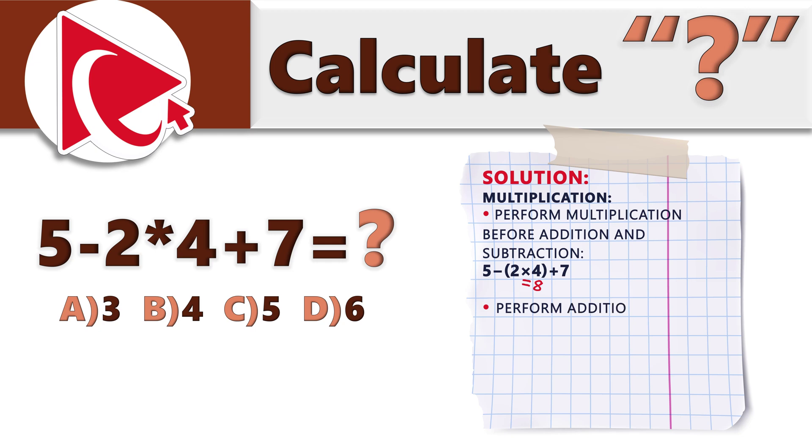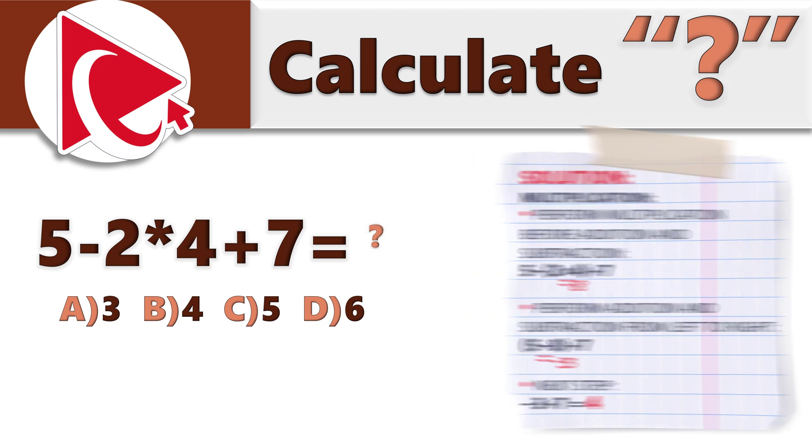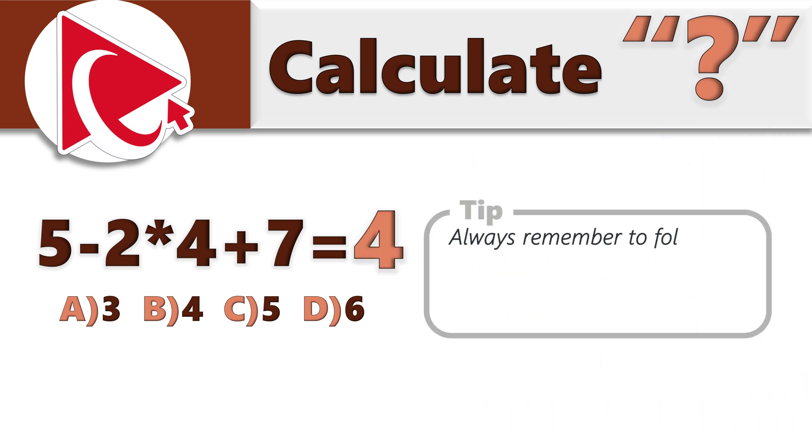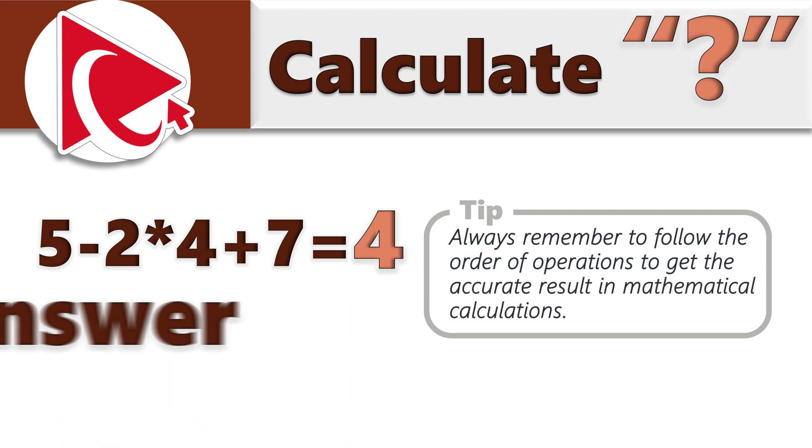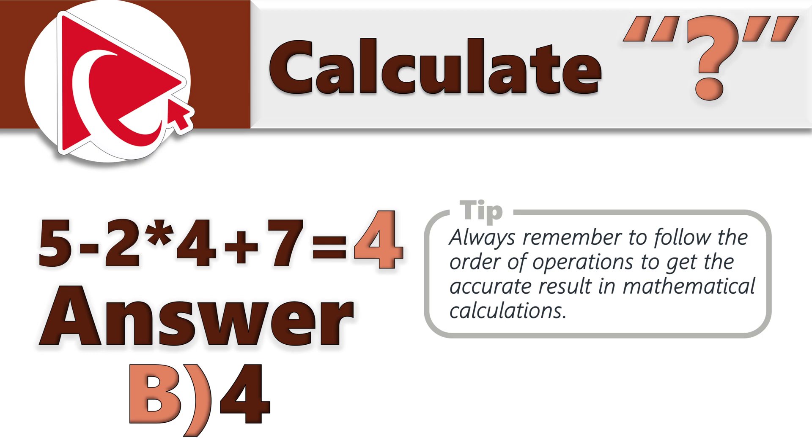Let's apply this order to this expression. We first need to do multiplication. 2 multiplied by 4 equals 8. So the updated expression will be 5 minus 8 plus 7. The next operation is from left to right. We need to do subtraction. 5 minus 8 equals minus 3. Next step, minus 3 plus 7 equals 4. So the tip here is always remember to follow the order of operations to get the accurate result in mathematical calculations. The correct answer here is choice B, 4.